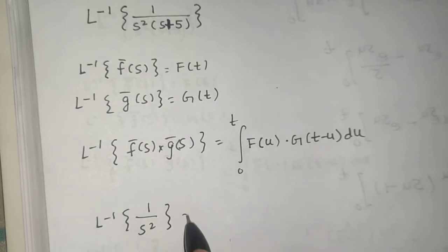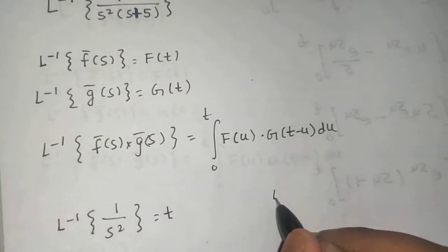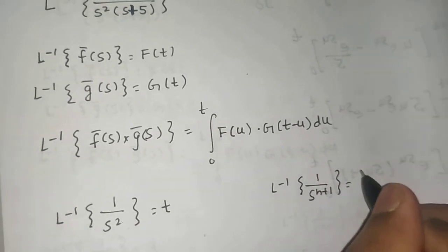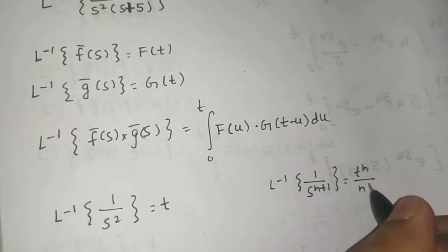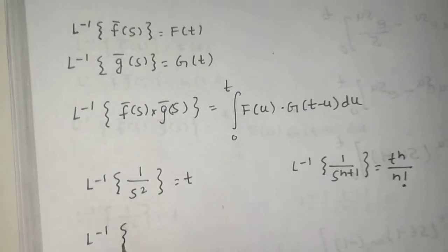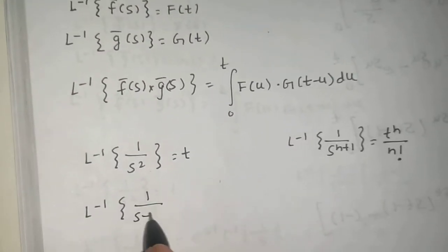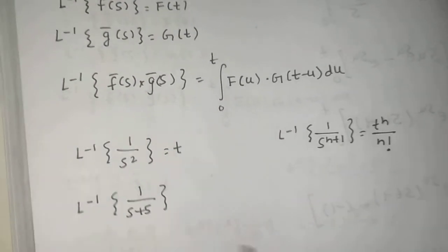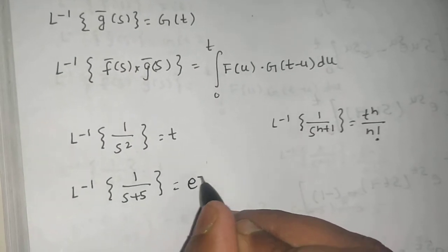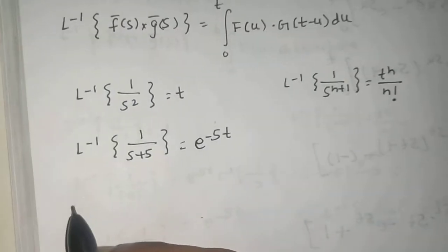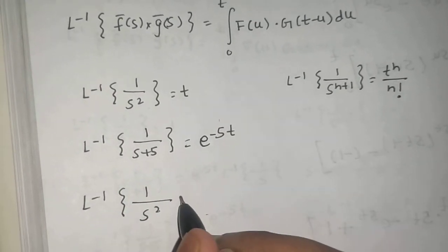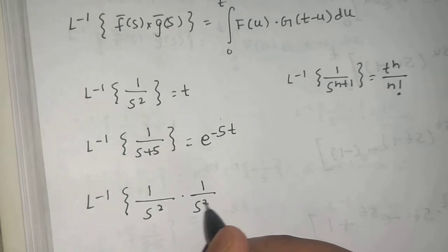Using that, the Laplace inverse of 1 upon s squared is t, because the Laplace inverse of 1 upon s^(n+1) is t^n divided by n factorial. The second one: the Laplace inverse of 1 upon (s+5) — since the Laplace inverse of 1 upon (s+a) is e^(-at) — gives e^(-5t).